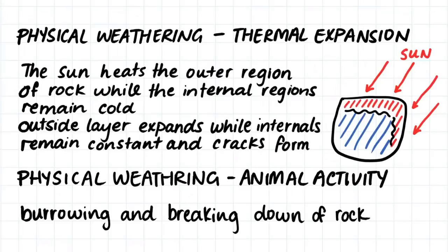Another type of physical weathering is thermal expansion. Thermal expansion occurs because the sun will heat the outside edges of the rock while the inside of the rock remains quite cold because it is not touched by the sun. The outside layer therefore expands while the inside remains constant, and this causes a crack forming parallel to the surface of the rock. Here we can see those cracks forming.